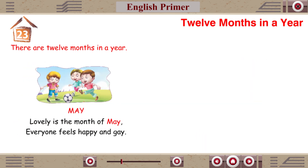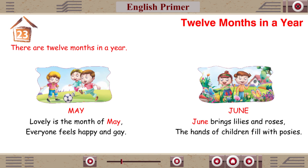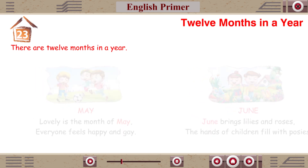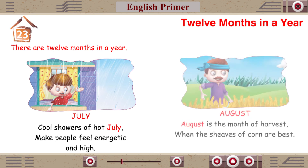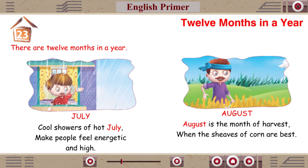Lovely is the month of May; everyone feels happy and gay. June brings lilies and roses. Cool showers of July make people feel energetic and high. August is the month of harvest when the sheaves of corn are best.